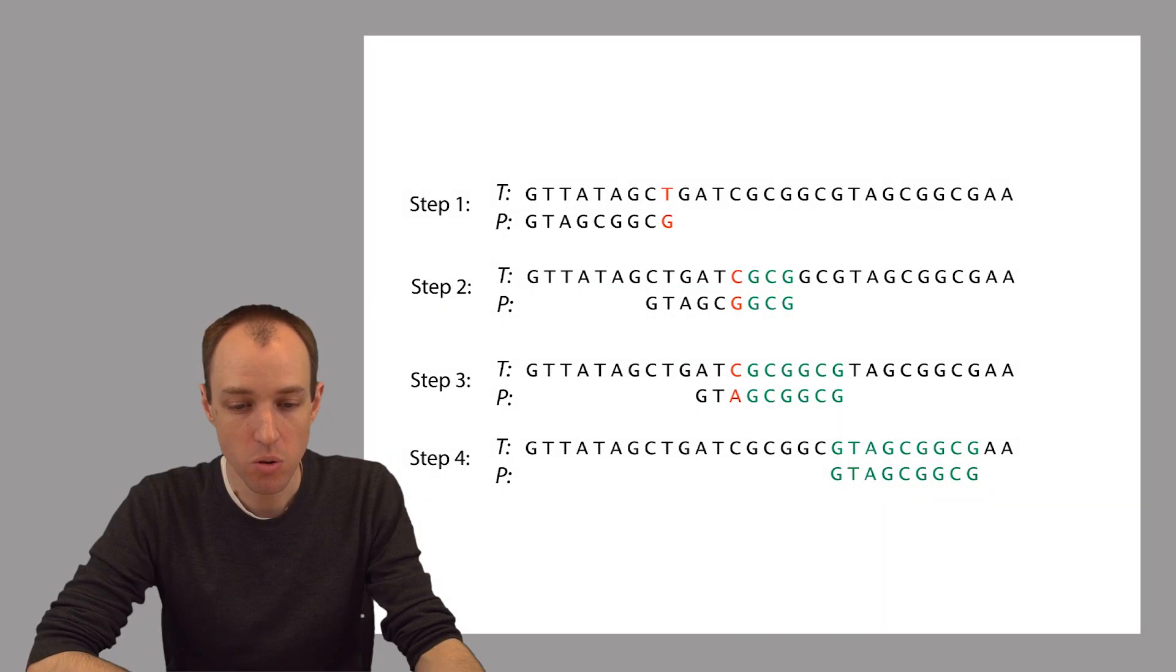So in this example, we went through a few steps of Boyer-Moore, and we skipped a total of 15 alignments.